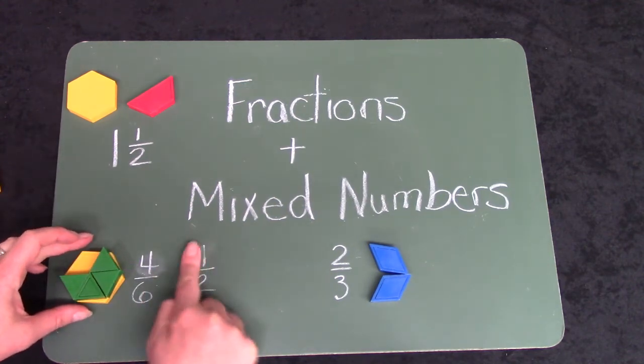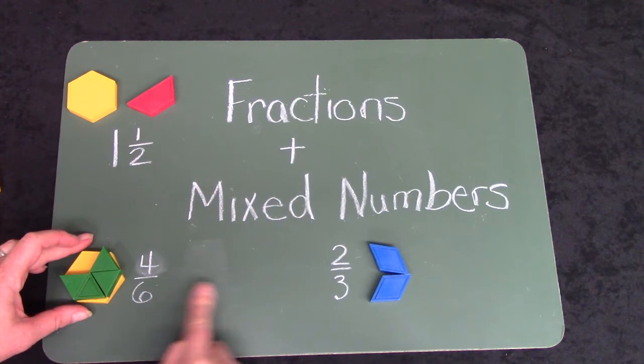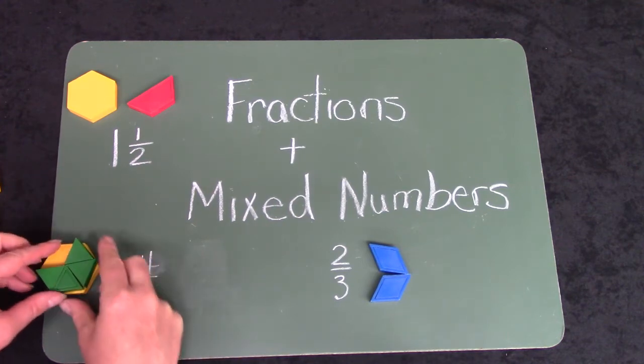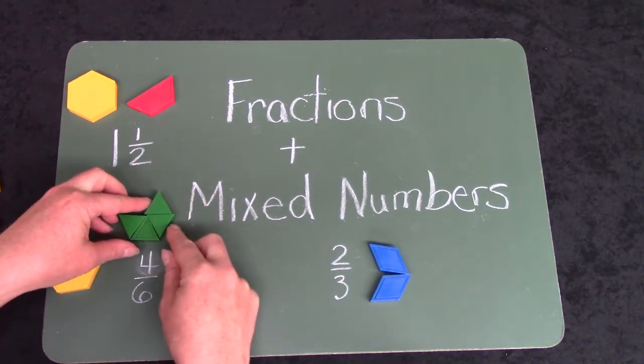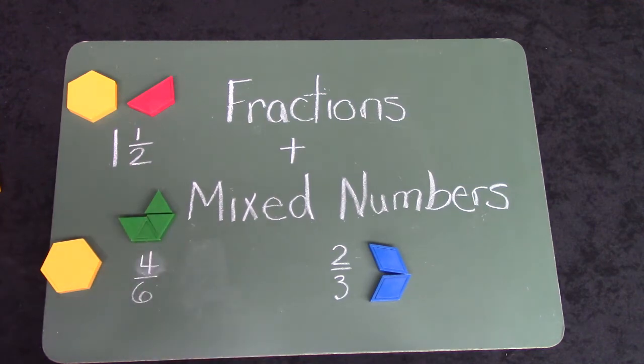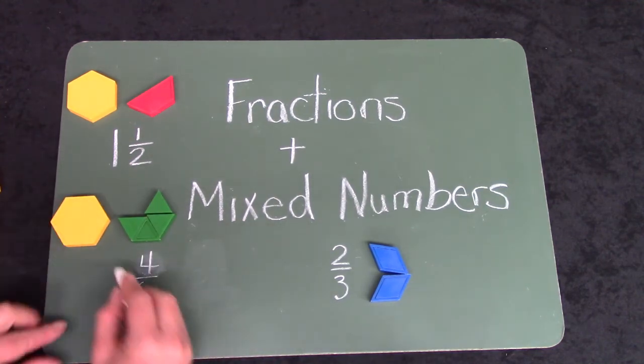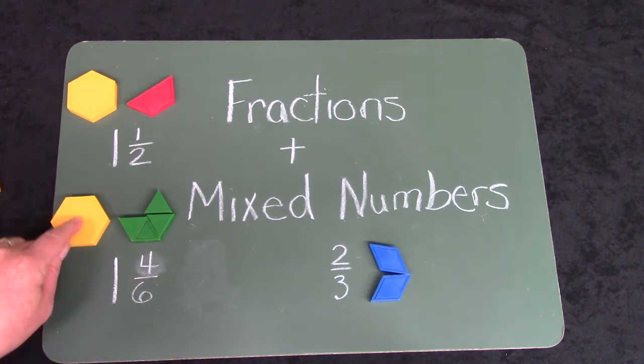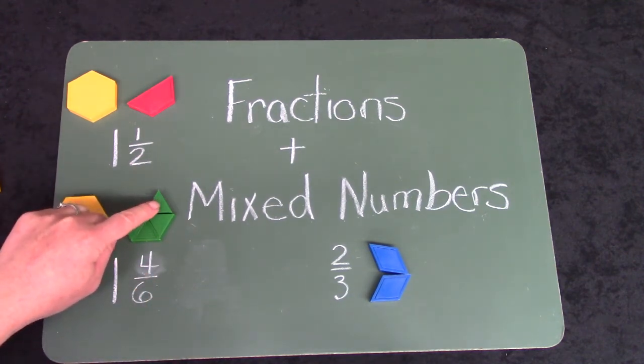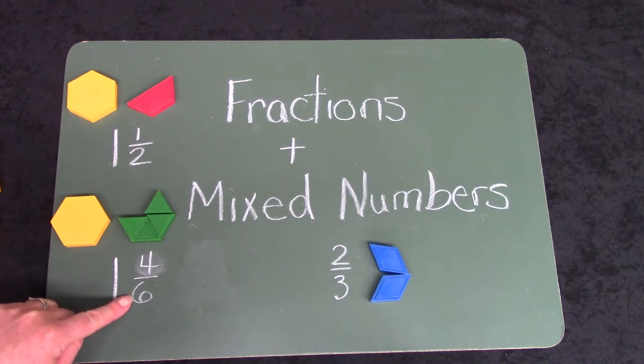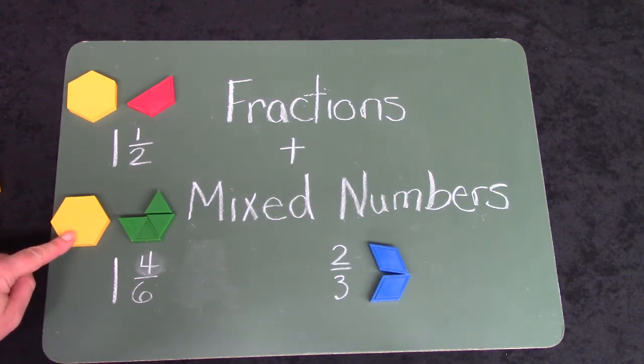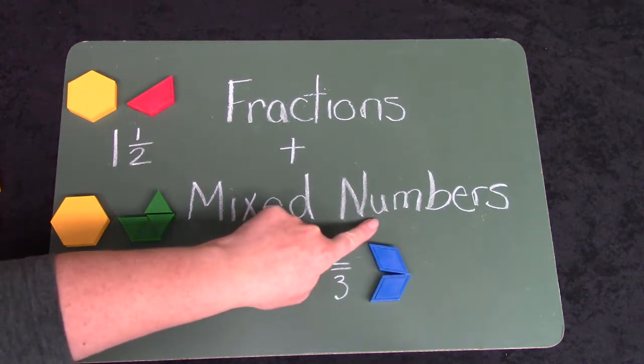Let's see right here. Here I have four sixths of a hexagon. And I have one hexagon. So this would be one and four out of the six pieces I would need to have another hexagon. One and four sixths is a mixed number.